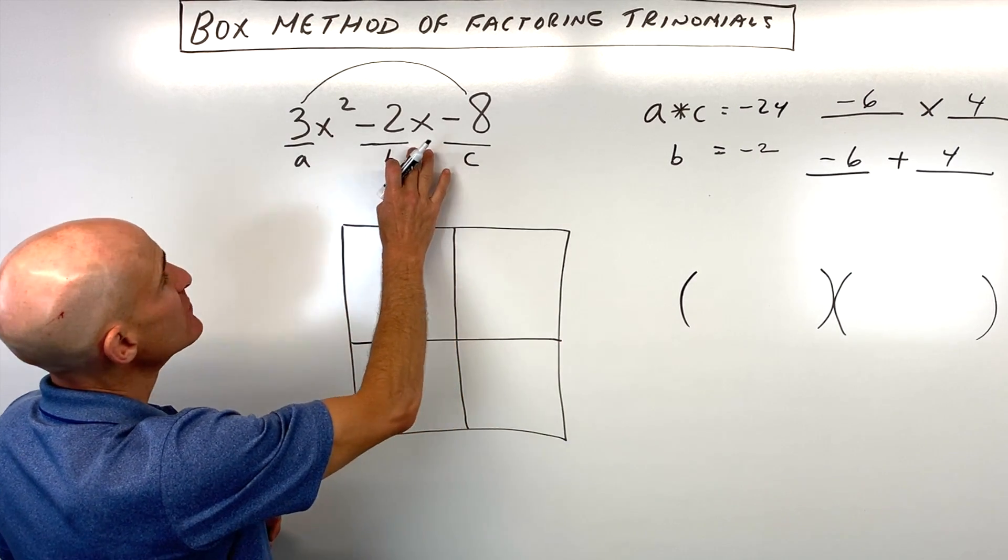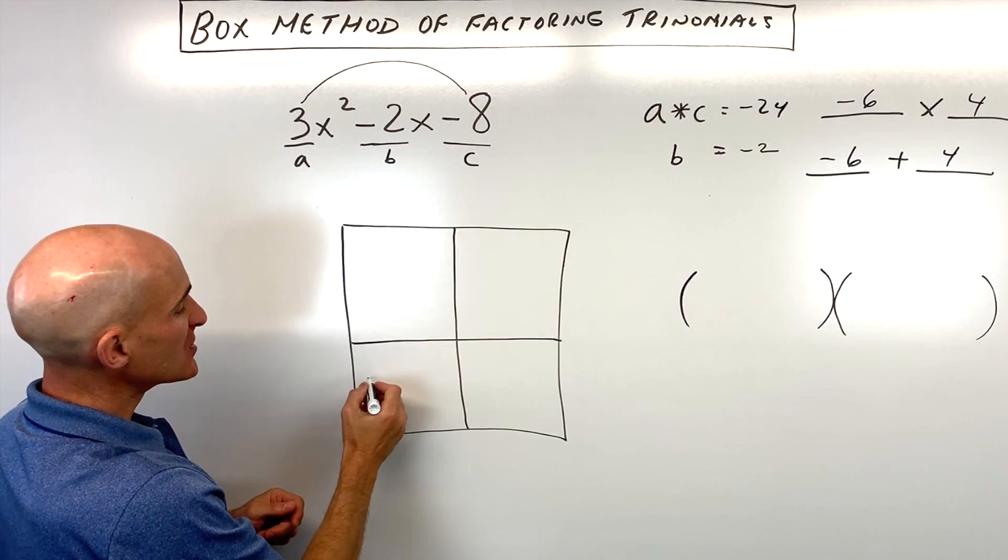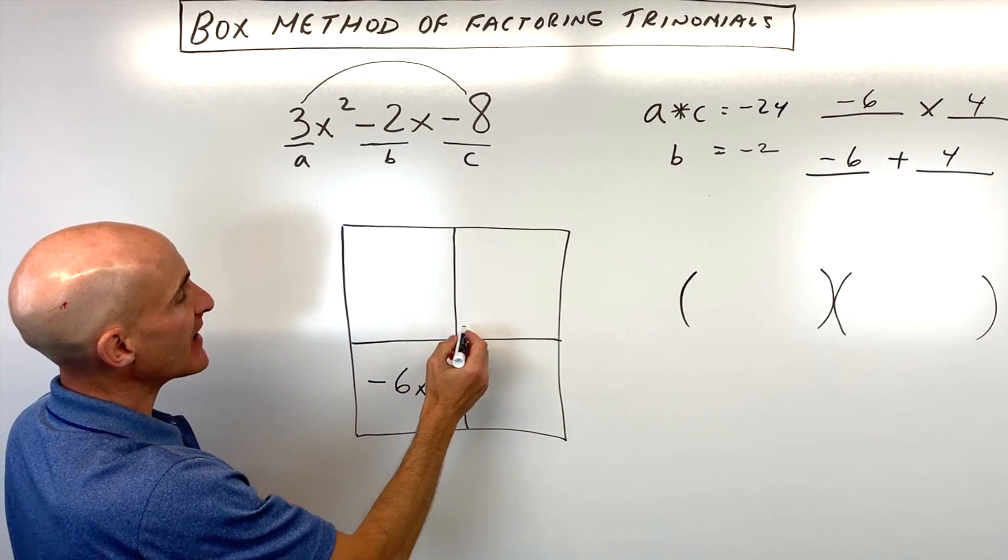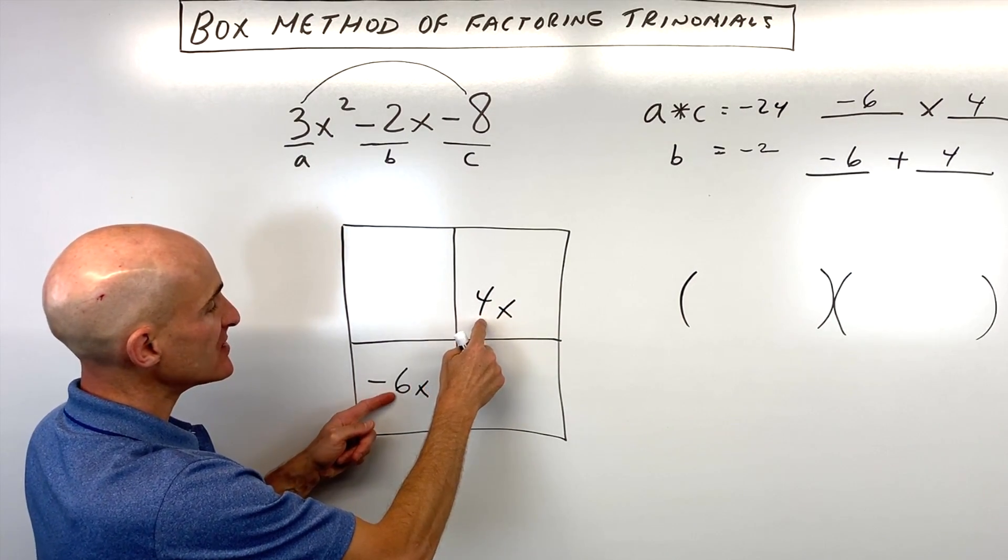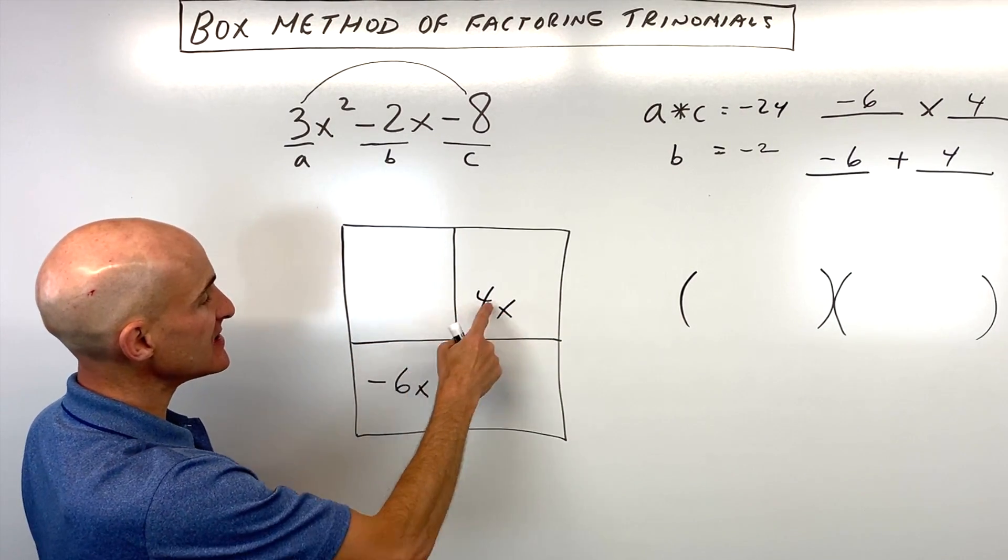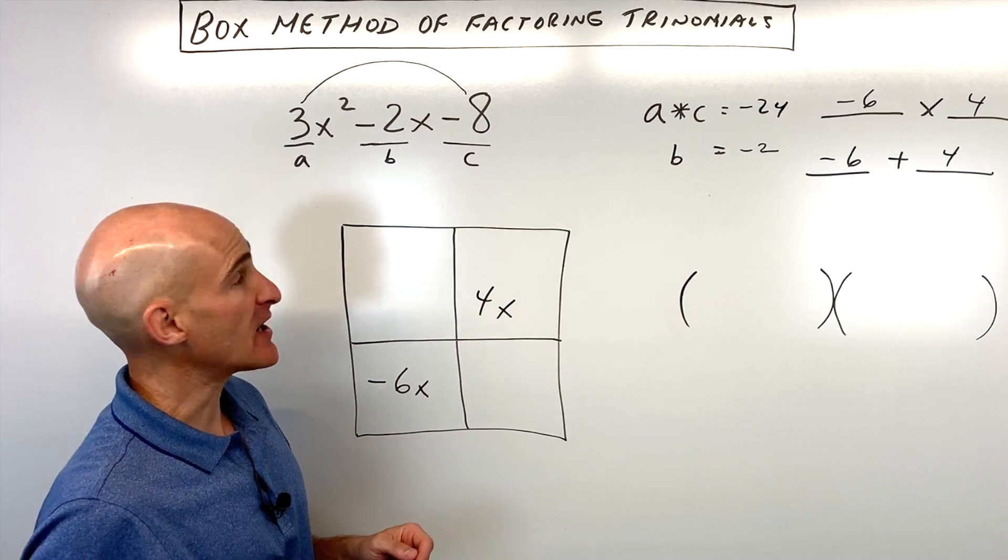So then what you do is you take this middle term, the negative 2x, and you split it up into negative 6x and positive 4x. It doesn't matter which position you put these in, but you can see these add up to the negative 2x, the middle term.